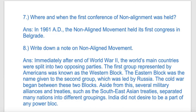The first conference of the Non-Aligned Movement was held. It was very important for India. The founding members included Egypt, Yugoslavia, and India. The first meeting was held in 1961, based on the principles of Panchsheel. The first meeting was held in Belgrade.